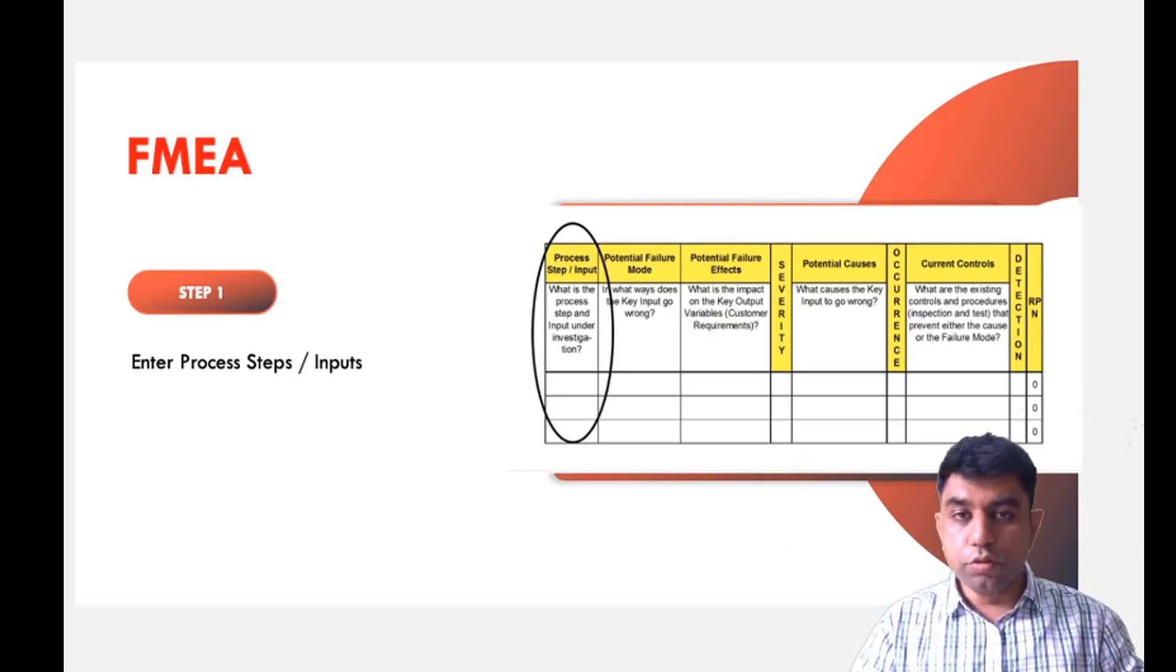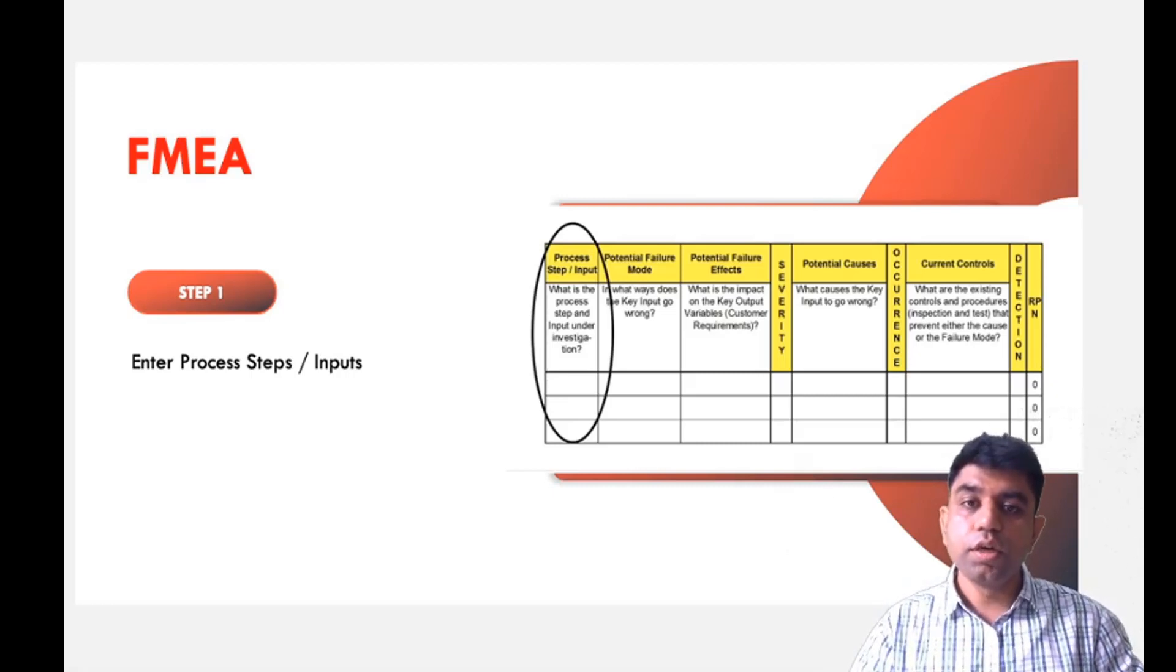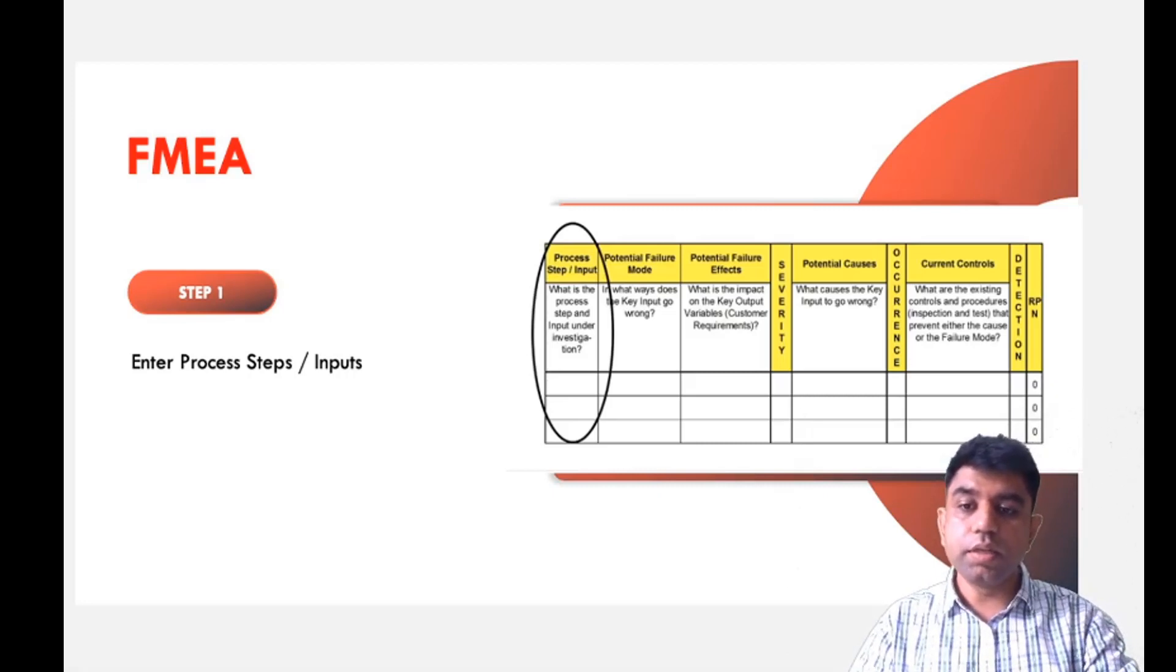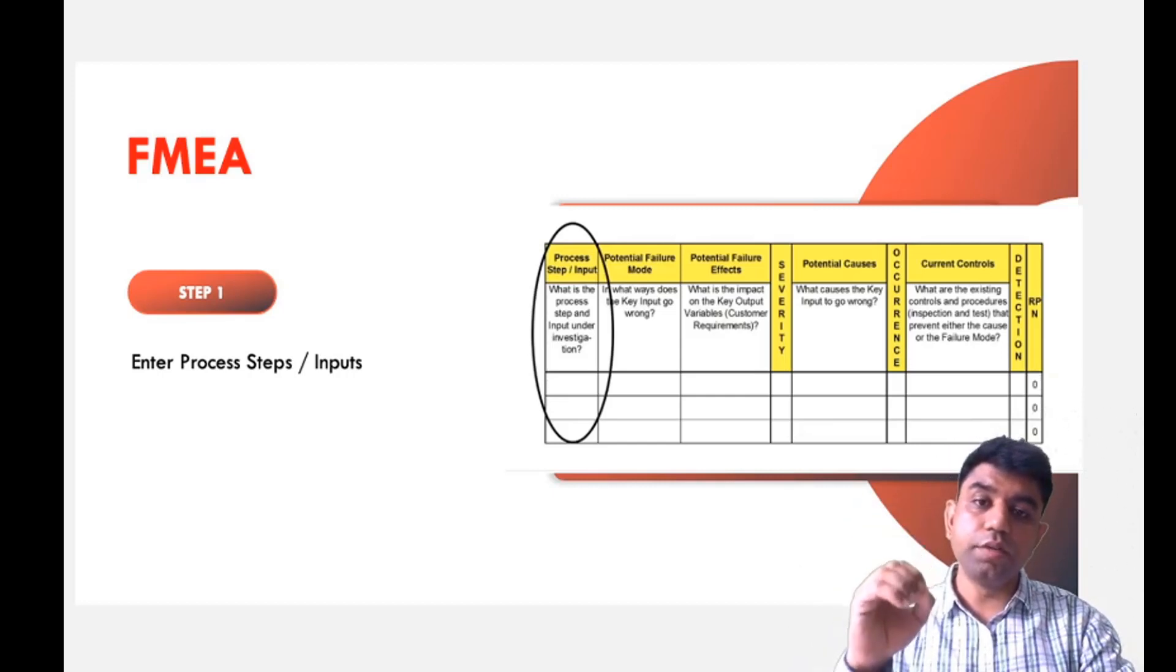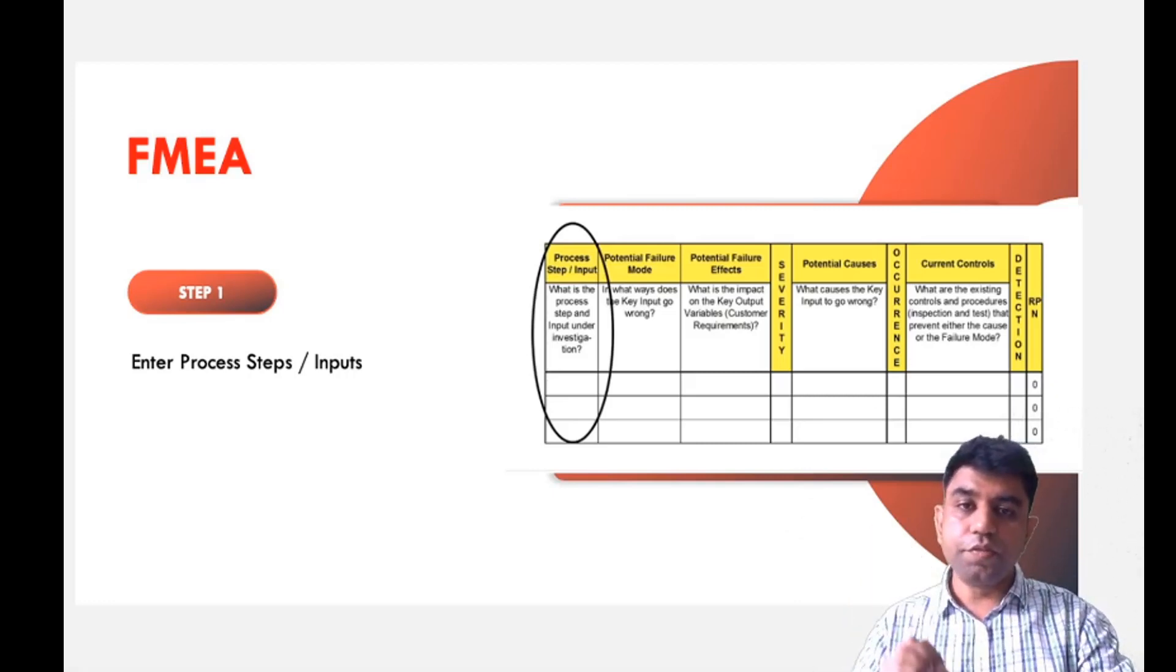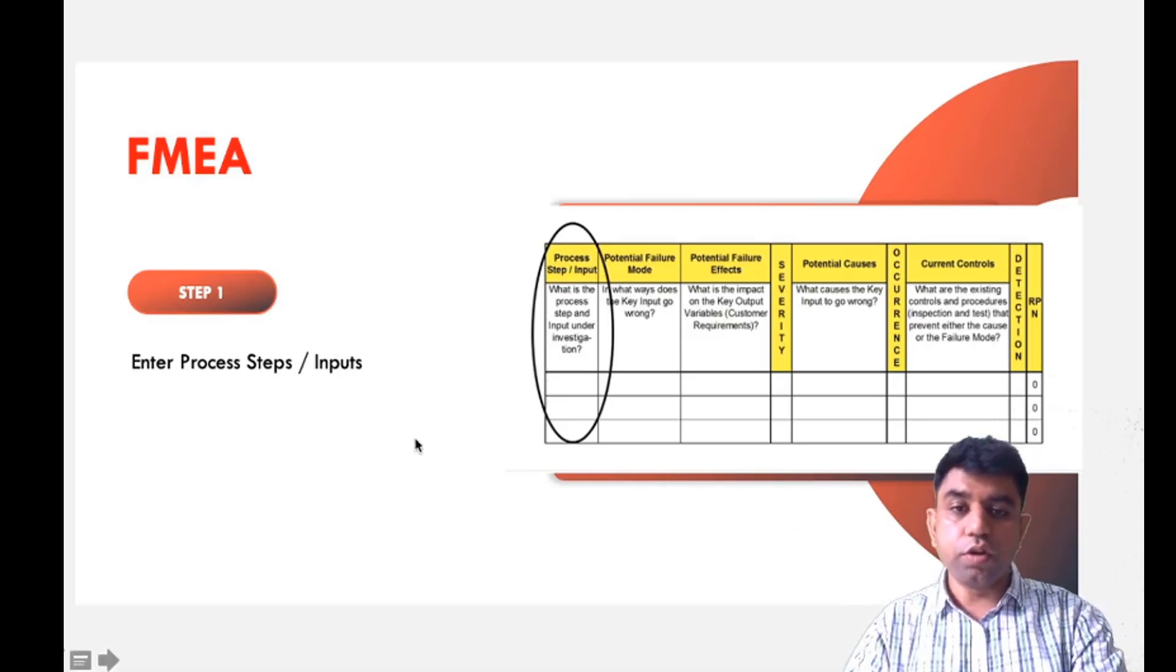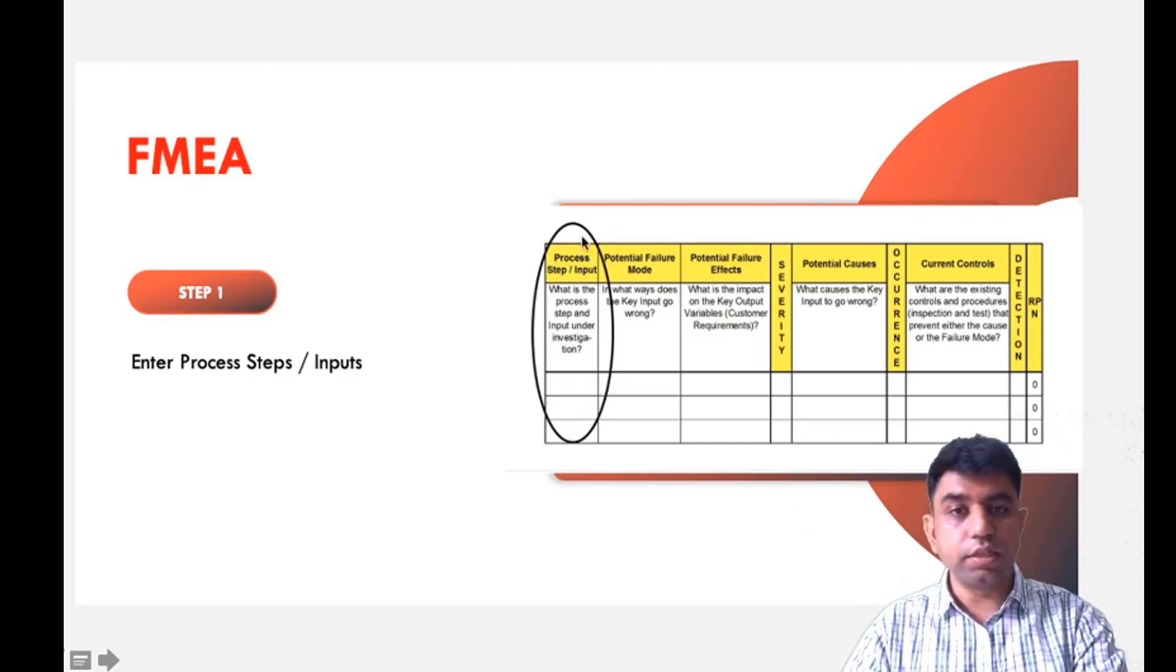How to do this FMEA analysis? We need a table. The first step is to enter the process steps and inputs. Let me explain with an example. Being mechanical engineers, we all know about casting process. In casting, we have different processes such as preparing a mold, pouring operation, and allowing solidification. First, we write all the different process steps or inputs in the first row.